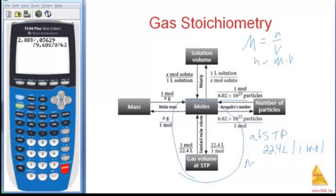And if I'm not at STP, I have to figure out my volume using PV=nRT, or V equals NRT over P.